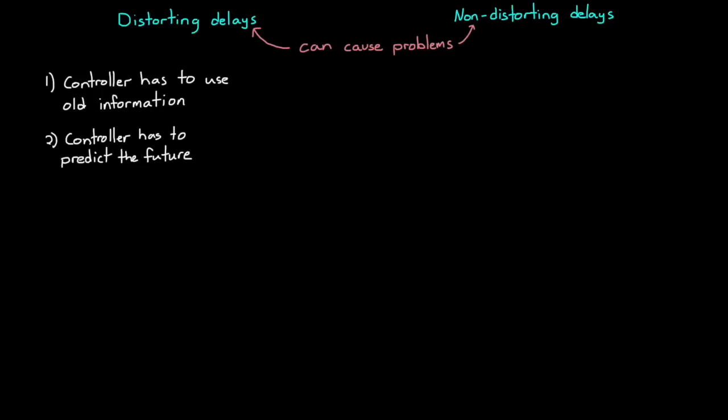Both of these types of delay exist in real, physical systems, and they both can cause problems in your controller design. This is because the controller has to use old information in order to determine the current controller output, or it has to predict into the future how its output will impact the system. This has the effect of lowering the sample time of your system, and therefore to counter it you have to lower the bandwidth, or speed, of your controller. If you don't lower the bandwidth, then the delay in the system could cause stability issues.